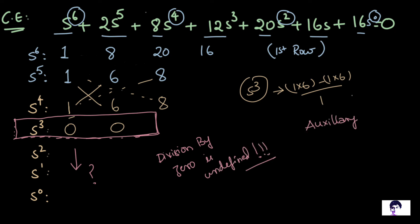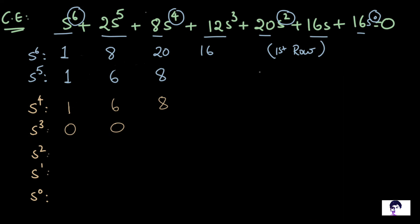So we take the help of something called an auxiliary equation. And using the auxiliary equation, we rebuild the row of zeros into a row of non-zero elements. Now, how do we do that? The auxiliary equation is formed by using the elements of the preceding row. In this case, the row S^4 is even and there are three elements. So the three elements would become the coefficients of three powers, that is S^4, S^2, and S^0. So 1, 6, and 8. Now, this is our auxiliary equation.